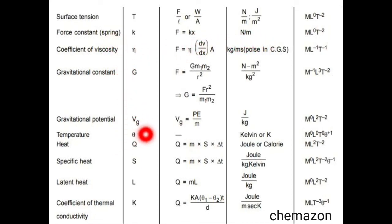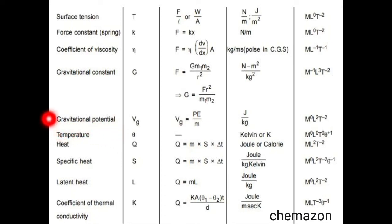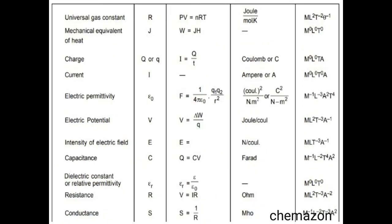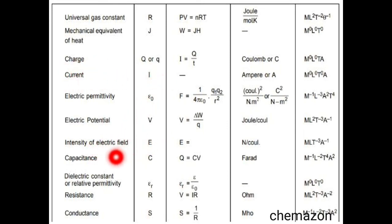Specific heat and latent heat will be encountered in chemical thermodynamics. You can go through all the units — it will be very helpful in the future. The universal gas constant comes up in gaseous state and many other chapters. Charge, current, resistance, and conductance will all be useful in electrochemistry.